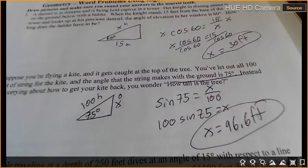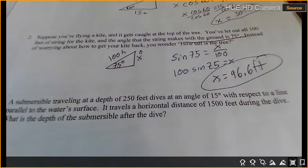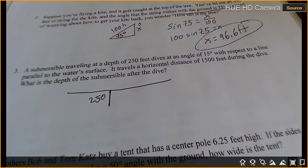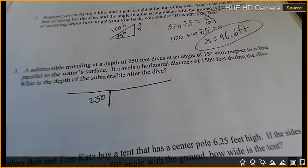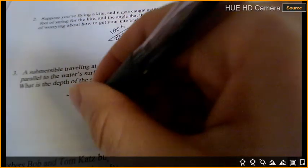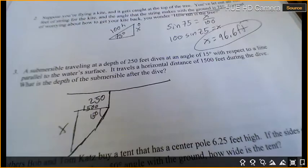Okay, the next one has kind of a weird picture so we're going to do it together. A submarine traveling at a depth of 250 feet dives at an angle of 15 degrees with respect to the line parallel to the water surface. It travels a horizontal distance of 1500 feet during the dive. What is the depth of the submarine after the dive? So here's the surface of the water. We're already 250 feet below the water. Now from here we're going to dive down. Here's the horizontal. We're diving down at 15 degrees.